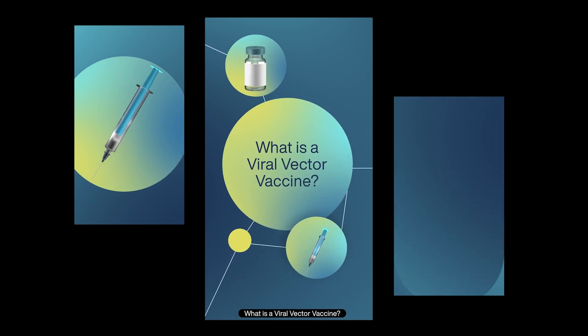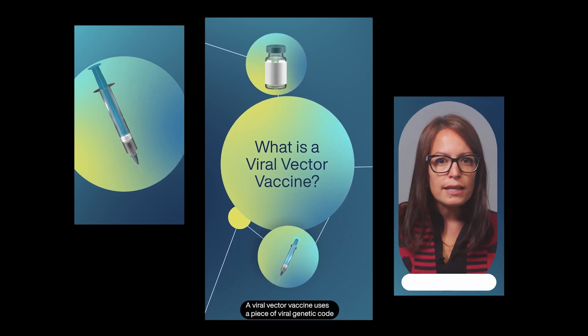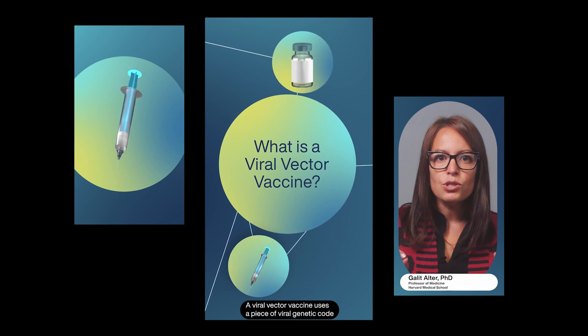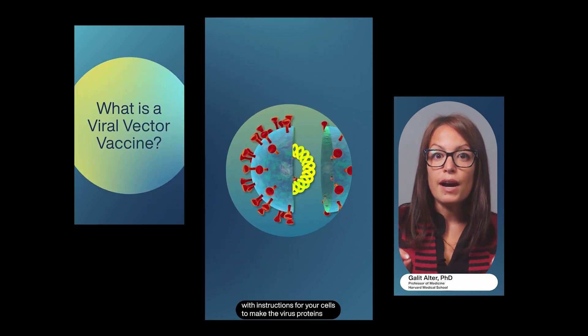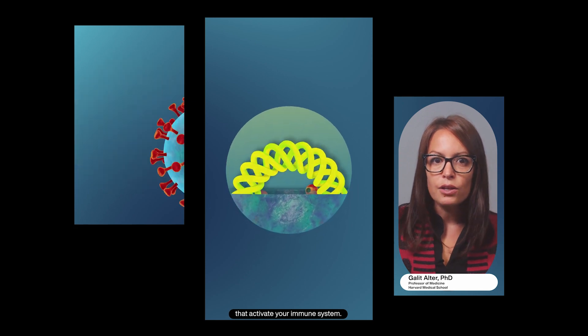What is a viral vector vaccine? A viral vector vaccine uses a piece of viral genetic code with instructions for your cells to make the virus proteins that activate your immune system.